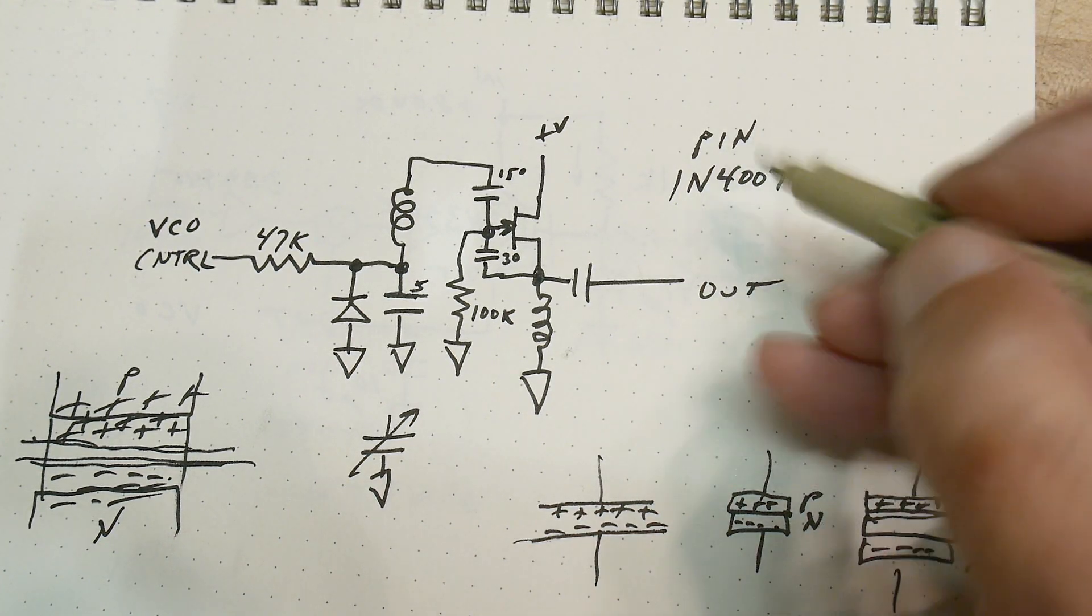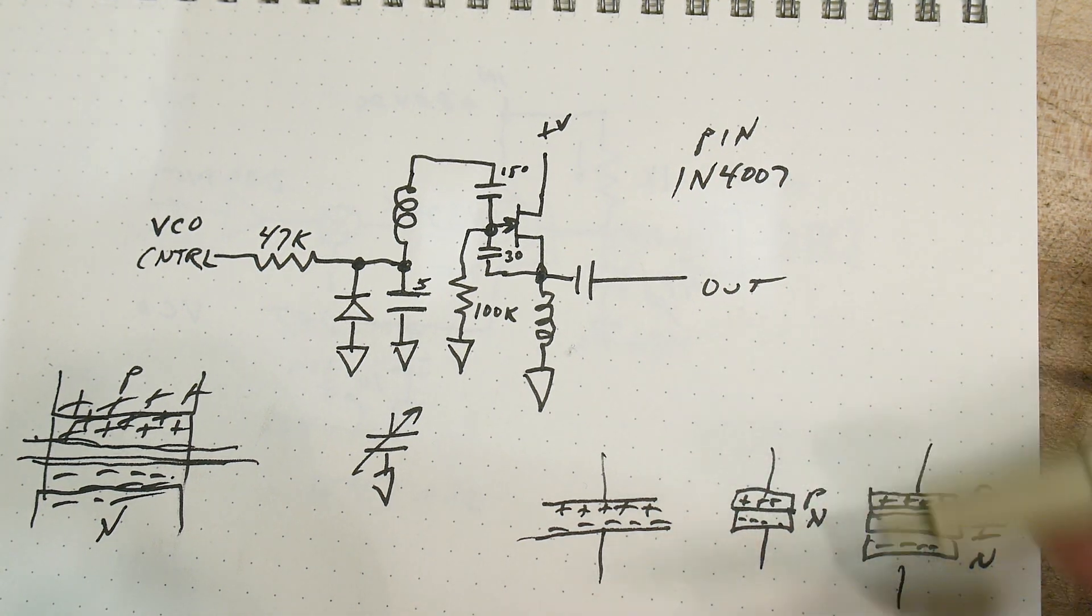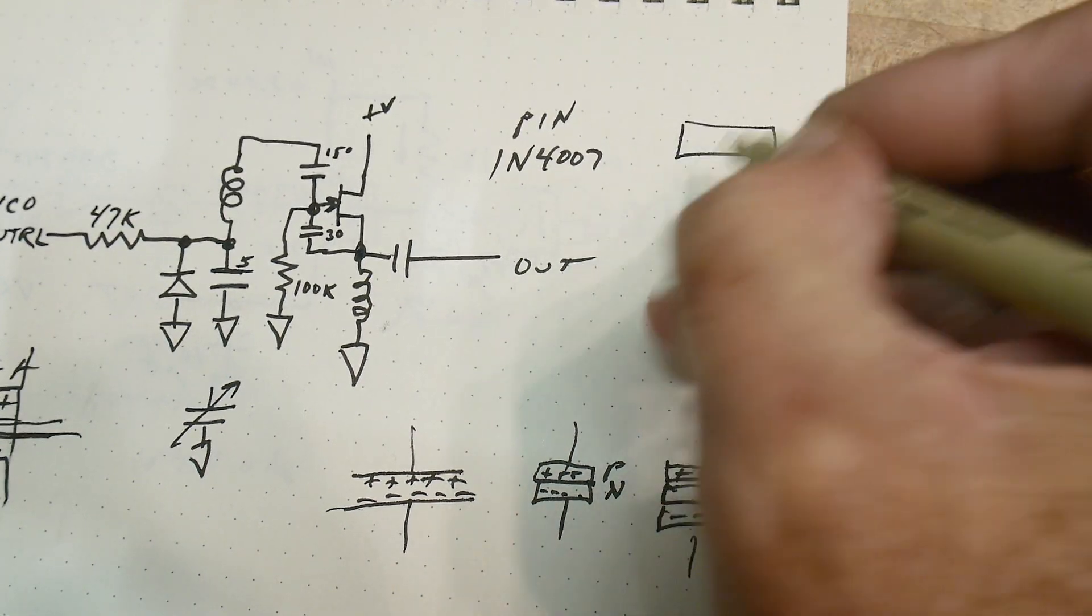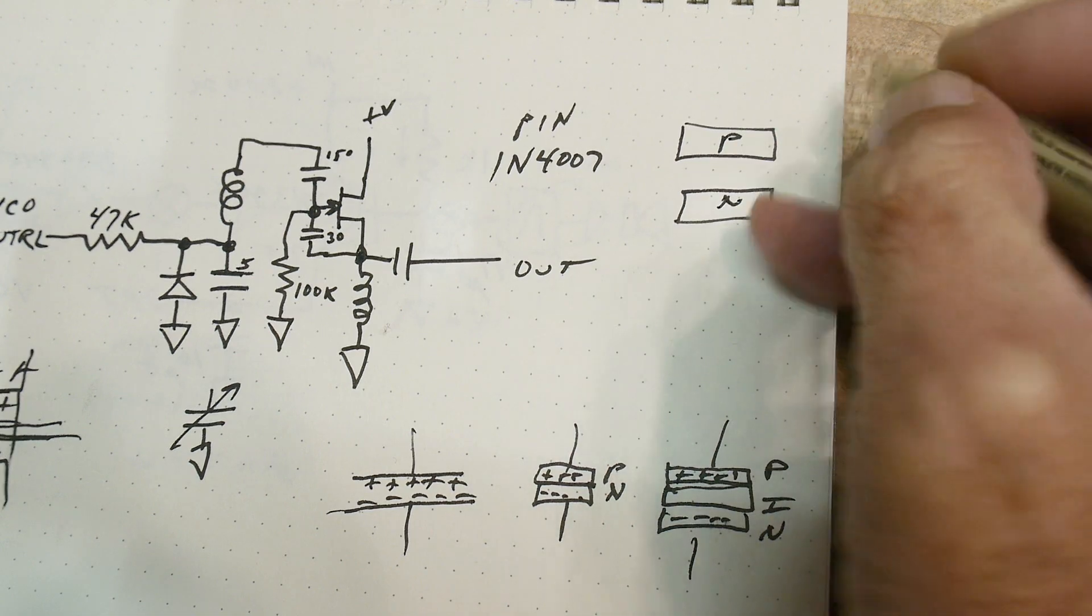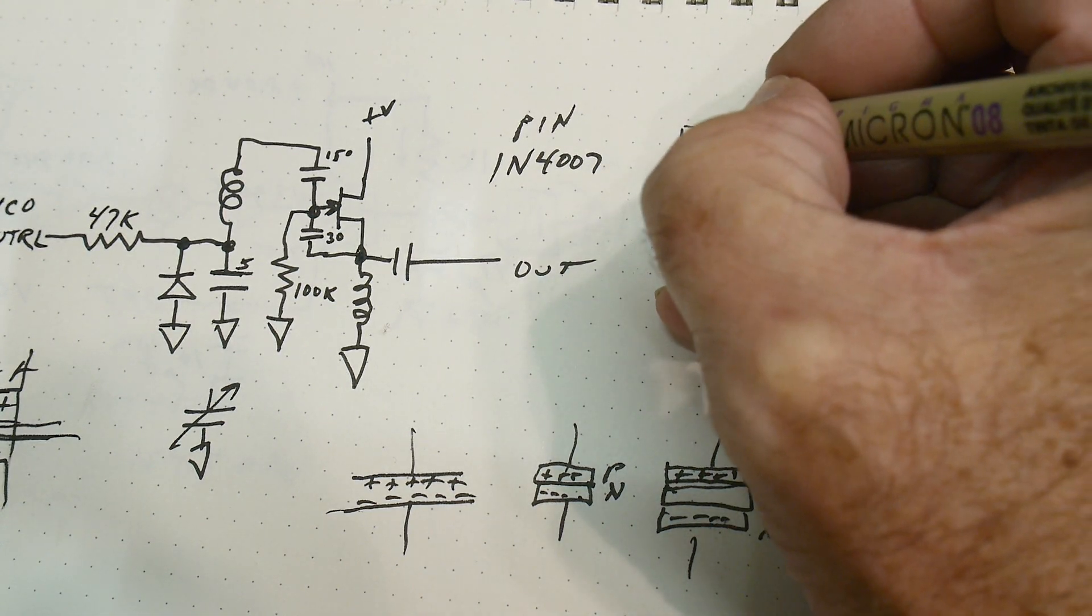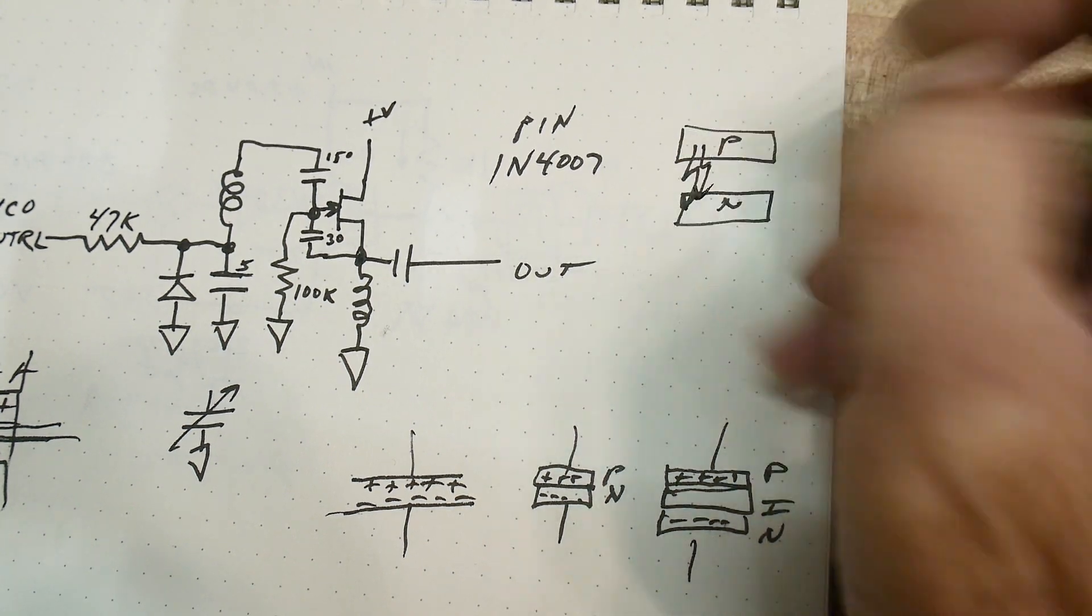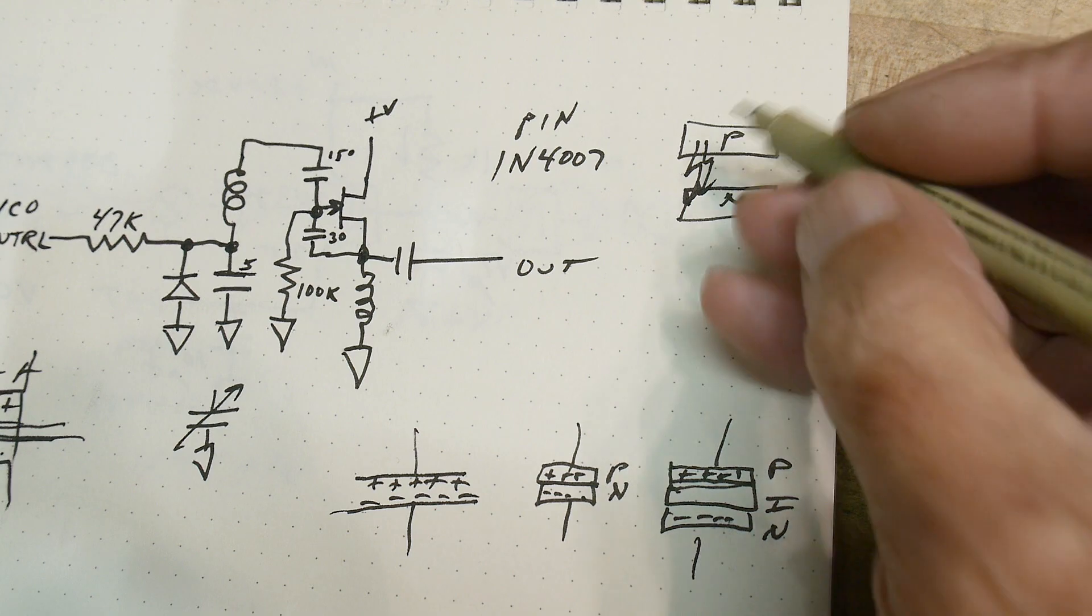And again, if I draw a P layer and an N layer, we don't want to have electricity zap between these and break it down. We want to have this PIN diode rugged for high voltage. Well, it means that they kind of put in a protective layer and the differences between these different diodes is there's kind of a bigger no man's land in the diode to help these not break down.